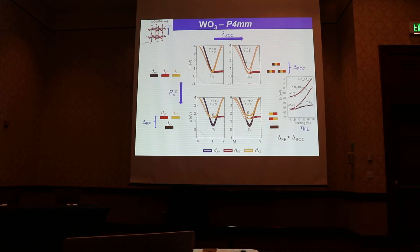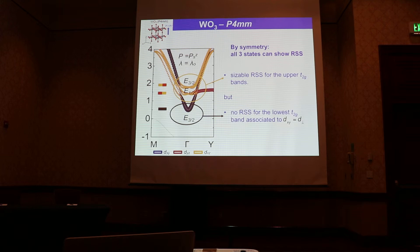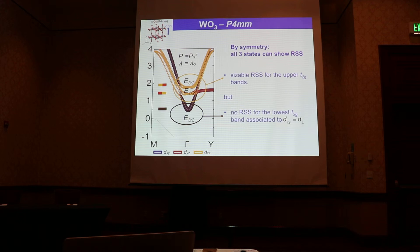The lowest band is then a purely DXY orbital, which is perpendicular to the polarization direction. Looking closely at the symmetries of the different bands, all three states are symmetry-allowed to show Rashba spin splitting. But in practice, the two upper states do show Rashba spin splitting, while the lowest state — the purely D-perpendicular state — shows no splitting at all.